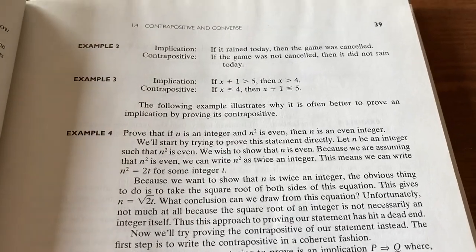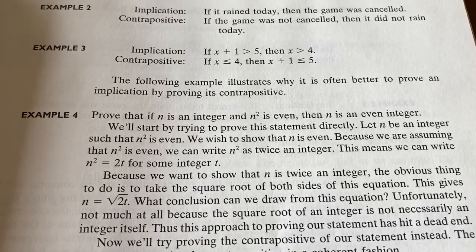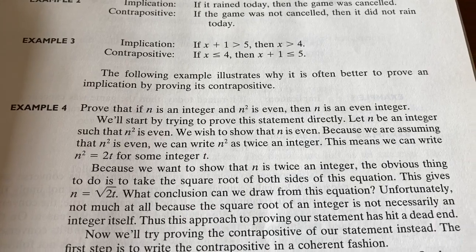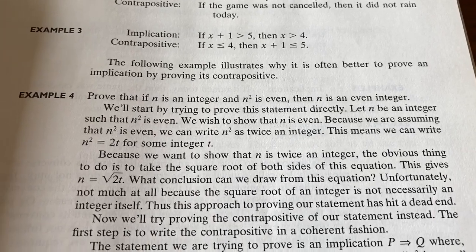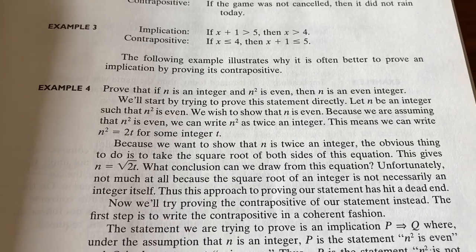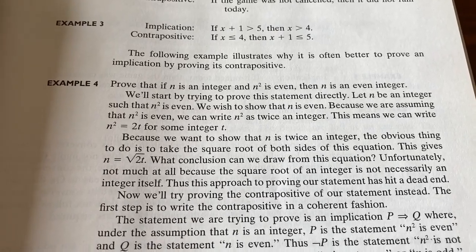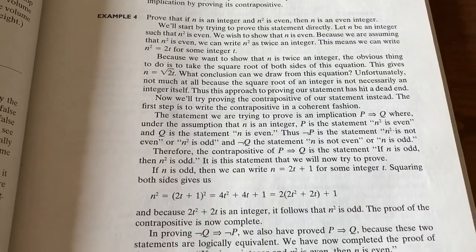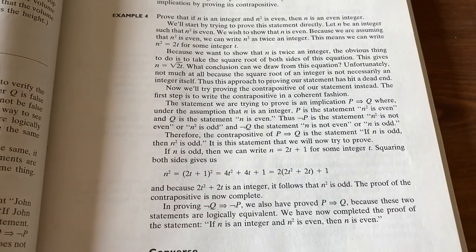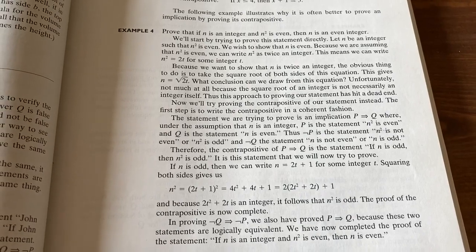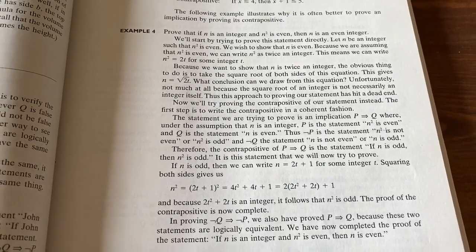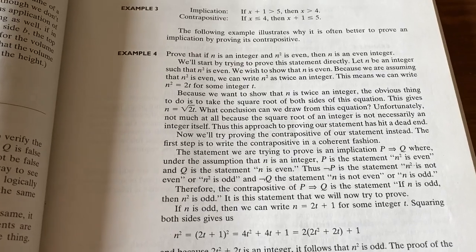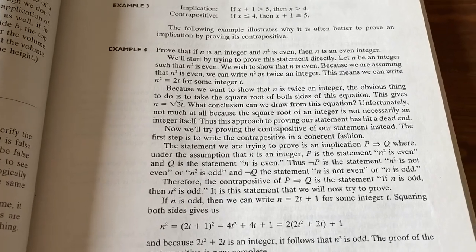This is from the section on contrapositive and converse. Example four says, prove that if N is an integer and N squared is even, then N is even. And this is nice because they go through it and the authors show you how they get stuck. So then they prove it using the contrapositive. It's a really nice example of things that actually happen when you're trying to prove things on your own. The authors kind of do it on purpose just to show you how to work around those difficulties.